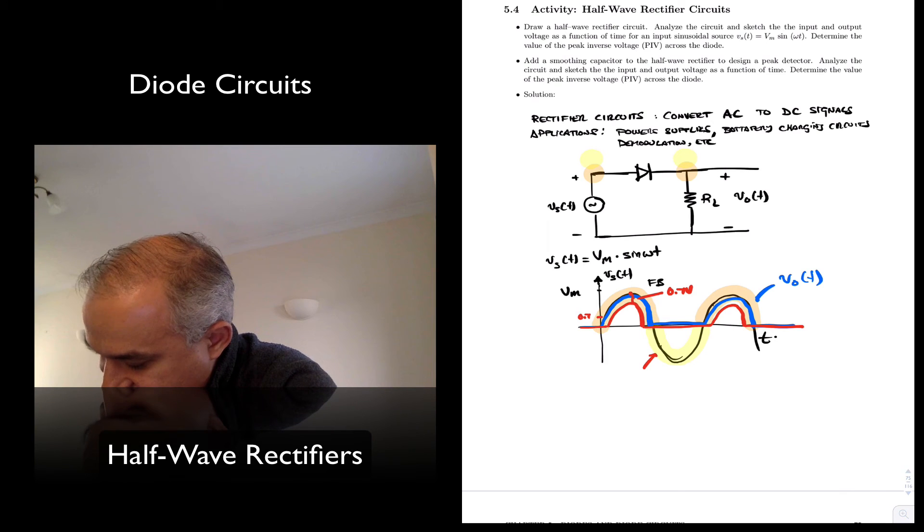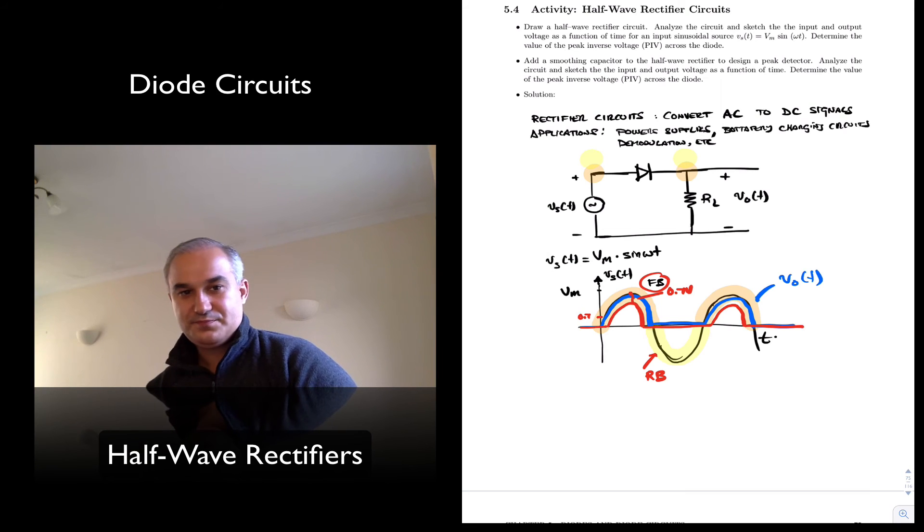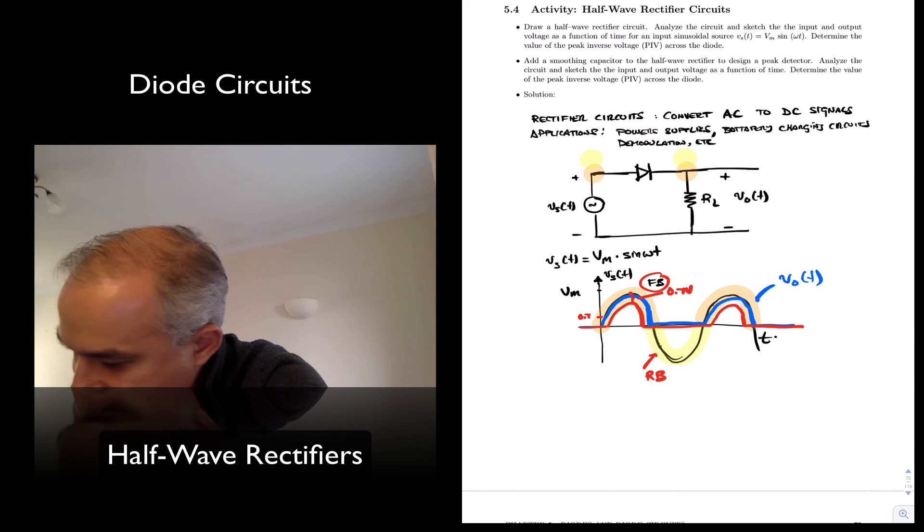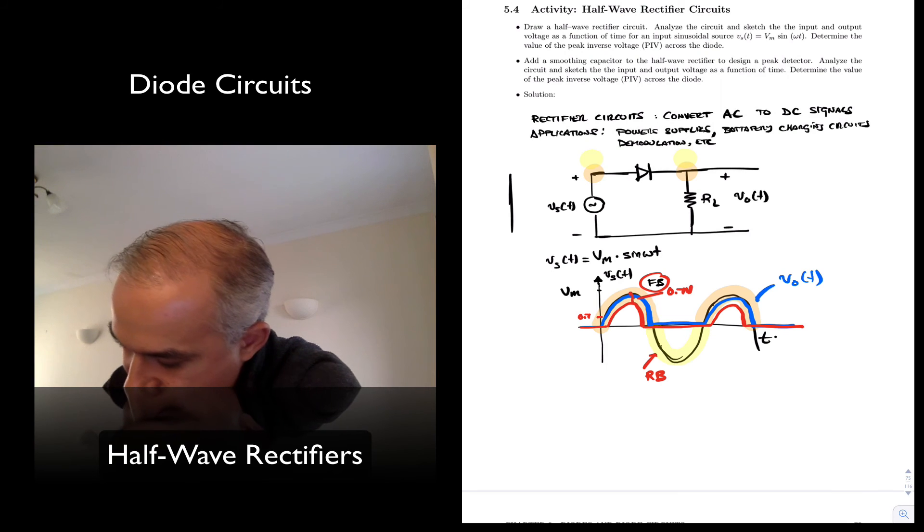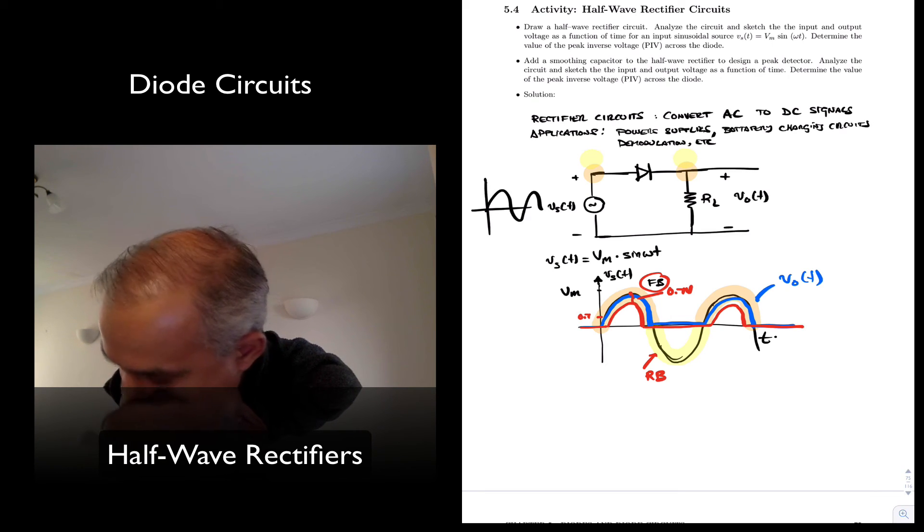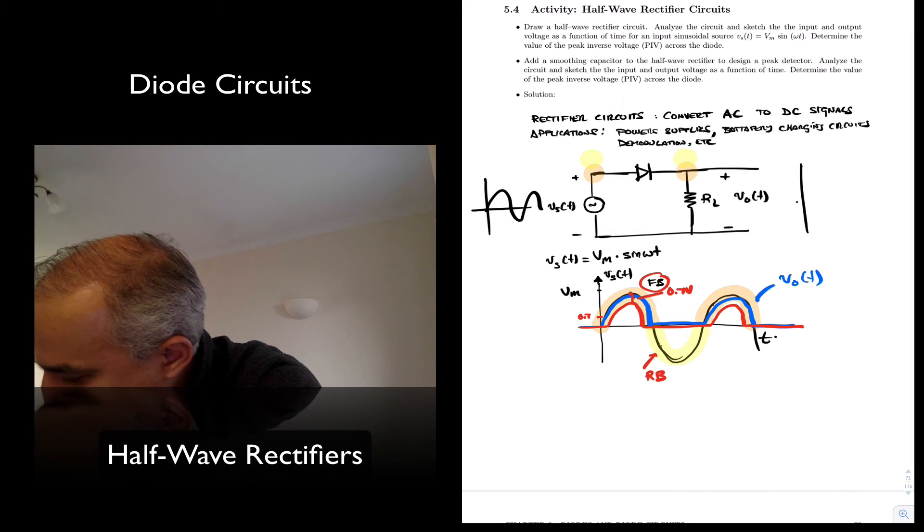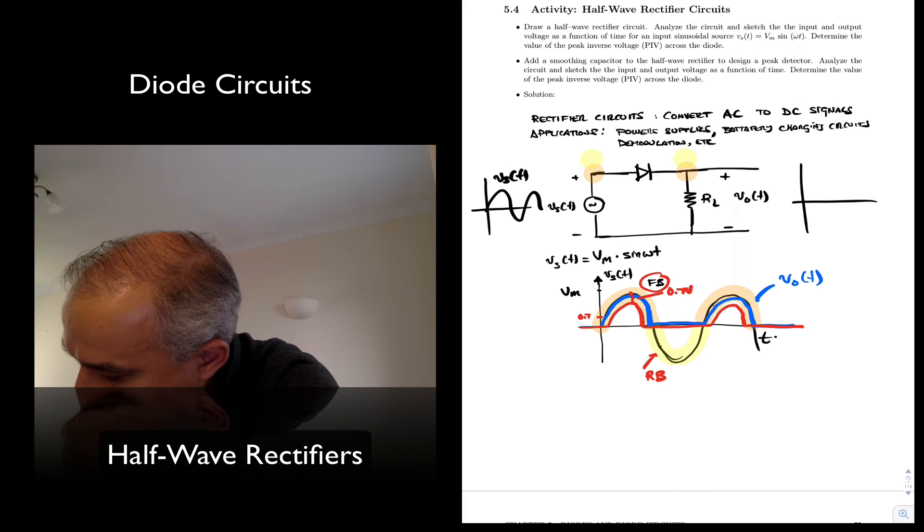Remember, this is reverse bias, forward bias here. And so what is the output? And we have seen it. For an input that is a sinusoidal input, our output Vs is going to be a rectified output, a DC signal.